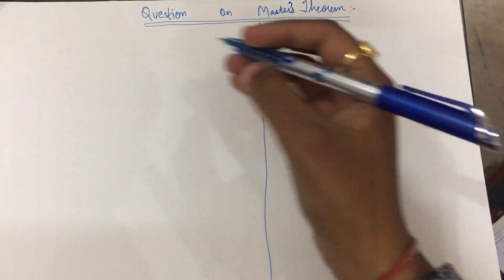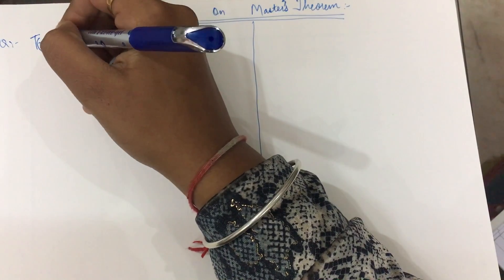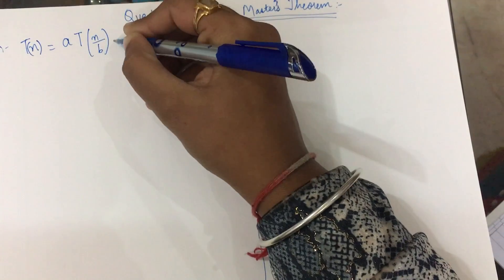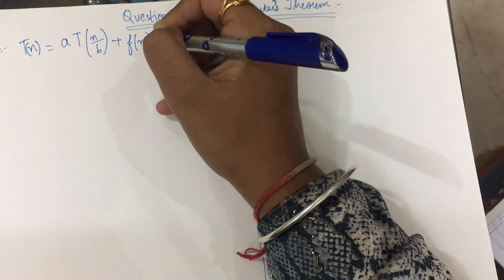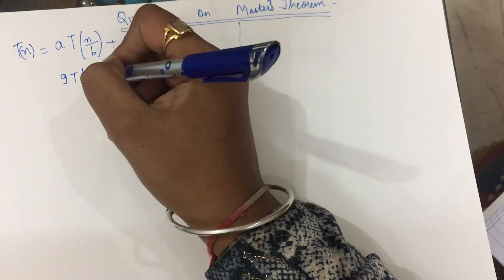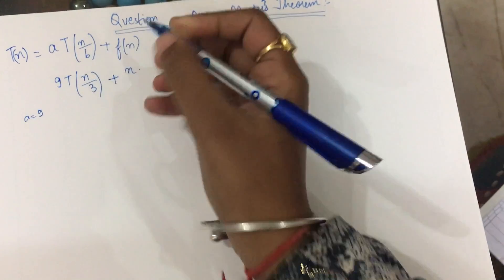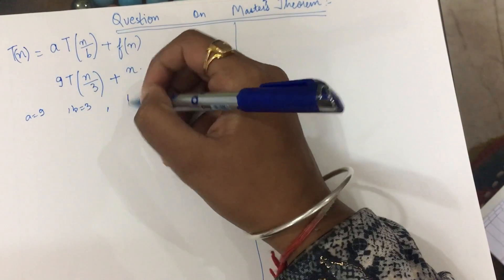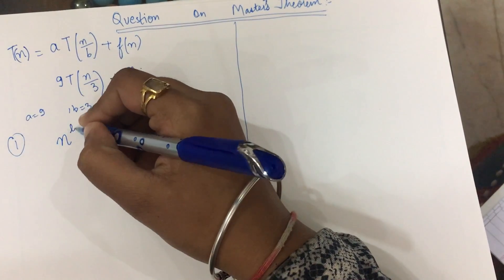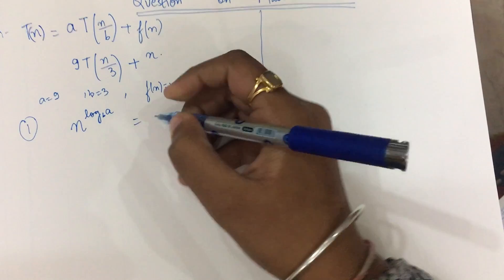Suppose I'm given a question T(n). The equation is written as T(n) = aT(n/b) + f(n). Here I'm given T(n) = 9T(n/3) + n. So it is very evident that a = 9, b = 3, and f(n) = n. The first step is to find out n^(log_b a).